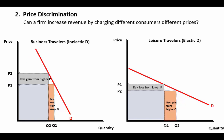Starting at the same price level, if the airline can identify who the business travelers are, it will want to increase prices for them — even for the same flight — knowing that the revenue gain from the higher price offsets the revenue loss from lower quantity on that inelastic demand curve. And if it can identify the leisure travelers, it will actually want to decrease the price for them, knowing the revenue gain from higher quantity offsets the revenue loss from the lower price. The key question is how does an airline distinguish between the two? One method is finding out how flexible the customer is in travel dates. Business travelers need to be at a meeting or conference on a specific day and aren't flexible, whereas leisure travelers are.